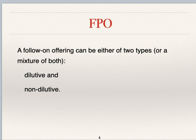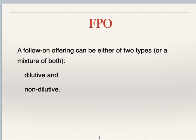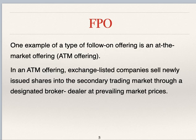In a non-dilutive follow-on public offer, the number of shares won't increase because shares which are privately held by the company — held by directors or other management — are put up for sale in the market. Since there is no increase in number of shares, earning per share remains the same, so there is no dilution of EPS.